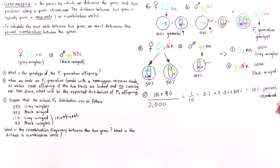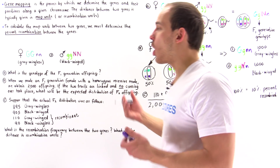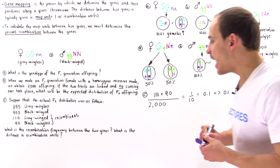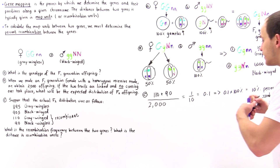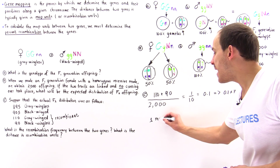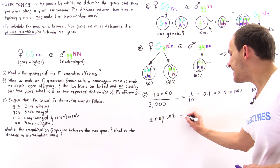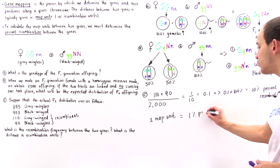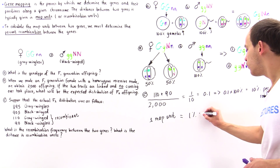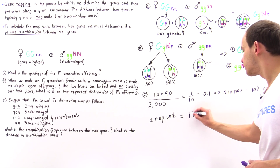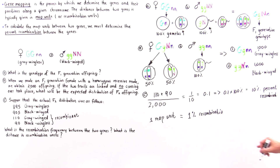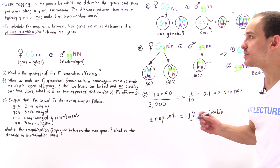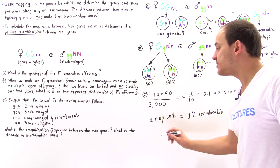This percent recombination tells us how many of the offspring resulted from crossing over. We can use this to calculate the map units. One map unit (or one recombination unit) is equal to 1% recombination. Therefore, since we have 10% recombination, the distance between these two genes is 10 map units, or 10 recombination units.